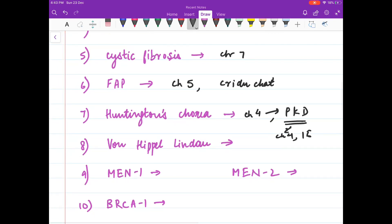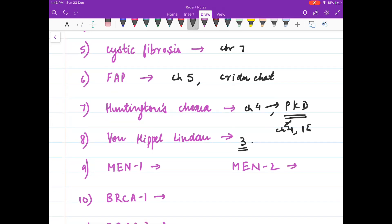Von Hippel-Lindau, this is chromosome 3. It is associated with clear cell renal cell carcinoma.